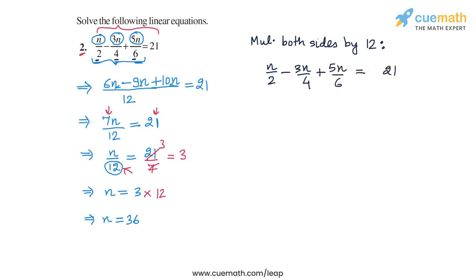And now we will multiply both sides of this equation by 12. So we have 12 times this is equal to 12 times 21.